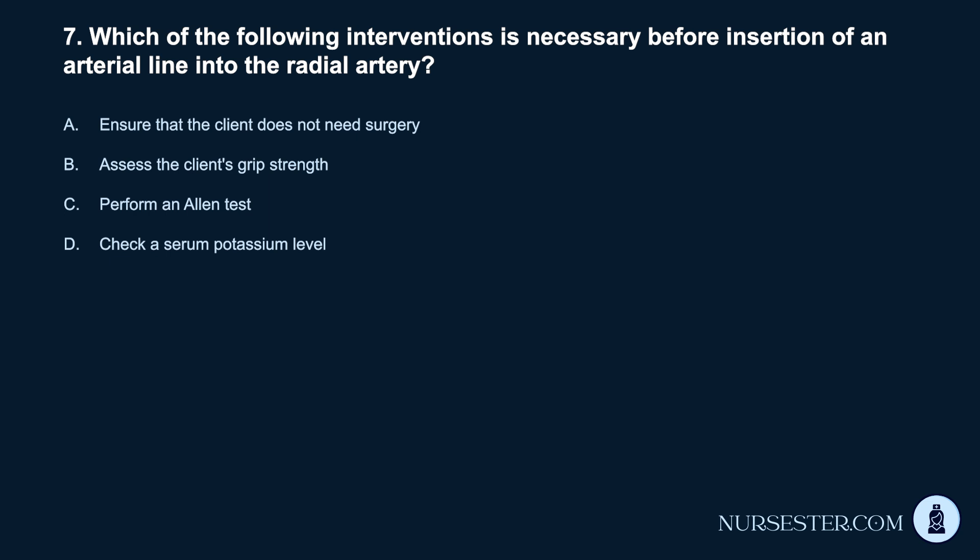Question 7. Which of the following interventions is necessary before insertion of an arterial line into the radial artery? A. Ensure that the client does not need surgery. B. Assess the client's grip strength. C. Perform an Allen test. D. Check a serum potassium level.